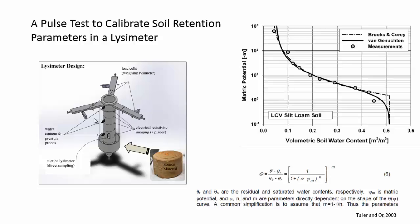We can monitor the moisture content using these sensors. We may also be able to measure the soil moisture potential, or the matric potential, or the pressure head using other sensors. We also have some electrical resistivity imaging that will be done. So we want to be able to analyze and calculate how we think the moisture is going to move through this lysimeter.